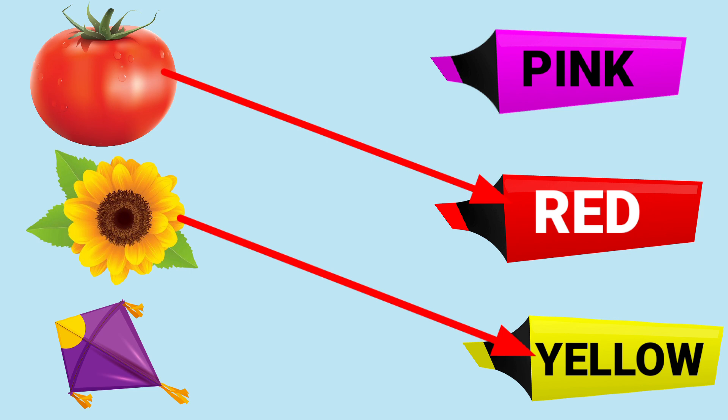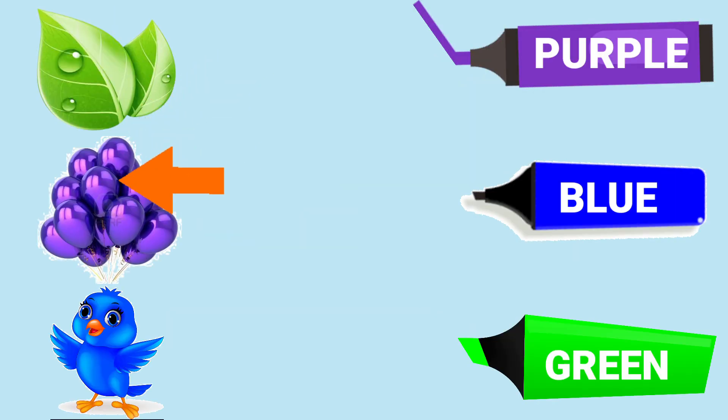And next, kite. Kite is? Which color? Yes, pink color. So, red tomato, yellow sunflower, pink kite.